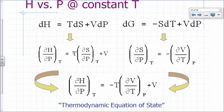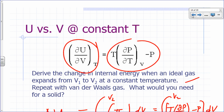Last time we derived the thermodynamic equation of state for the dependence of the internal energy on the volume. It said that the partial of U with respect to V at constant T was T times the partial of P with respect to T at constant V, minus P. We started with the fundamental equation du = T dS minus P dV.